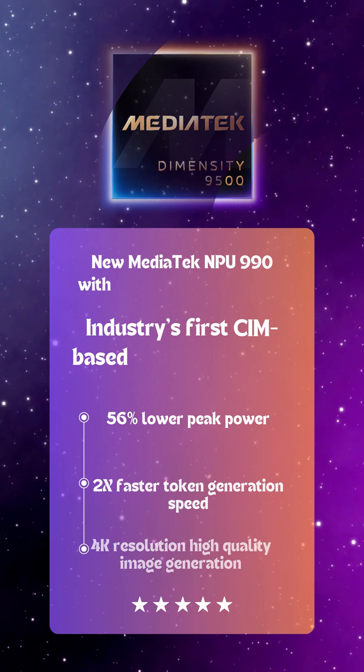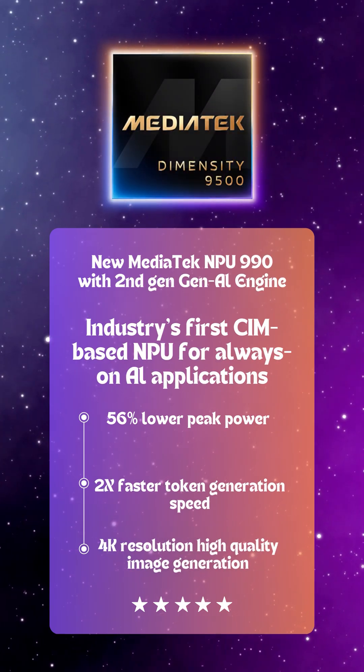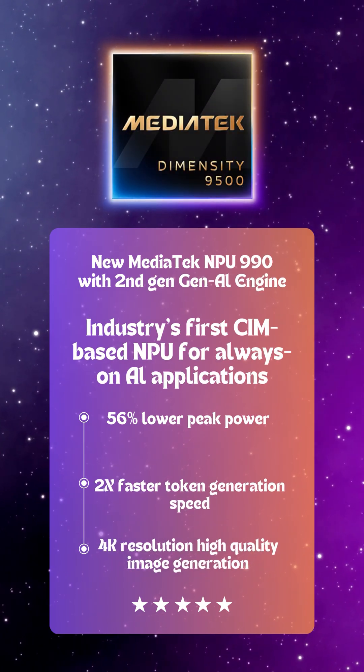My second question: everyone is talking about on-device AI. How is the Dimensity 9500 changing the game here? AI is one of the most important parts of the chipset. The MediaTek Dimensity 9500 supports NPU 990, second-generation Gen AI technology, which enhances the overall AI capabilities. We are also using a special technology called SME2, which further enhances the CPU's ability to handle AI tasks as well.